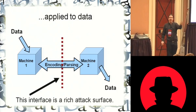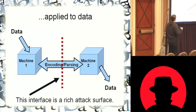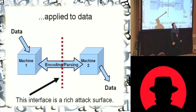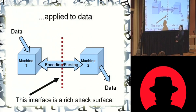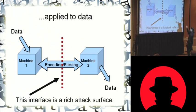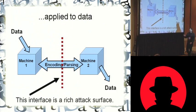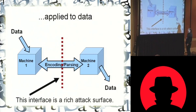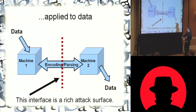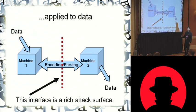The biggest problem we're going to look at is right in here, where our machine Alice is saying something and our machine Bob is parsing it, hearing it. That's where you're going to find your biggest potential for confusing Bob's idea of the data from what it originally was.